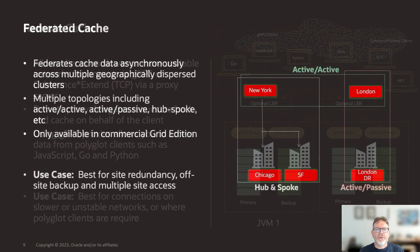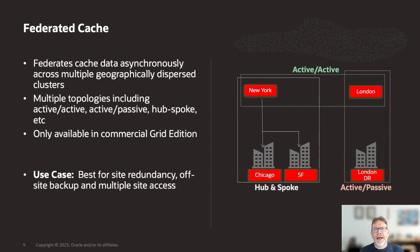Federated caches replicate data asynchronously across multiple geographically dispersed locations. Cache data is federated across clusters to provide redundancy, off-site backup and multiple points of access for application users in different geographical locations. This option is only available in Coherence Grid Edition.